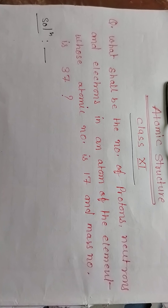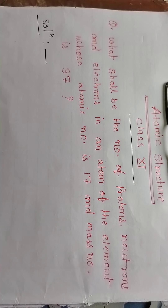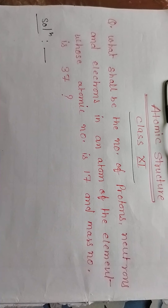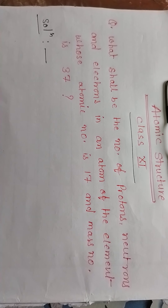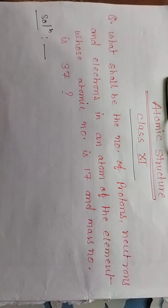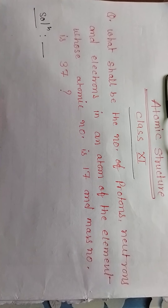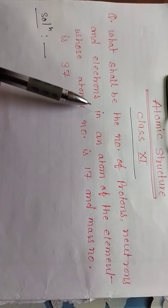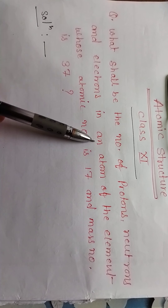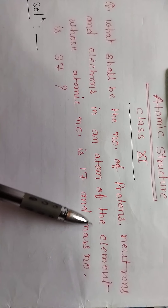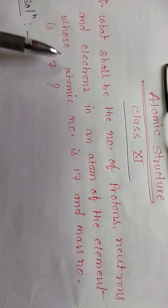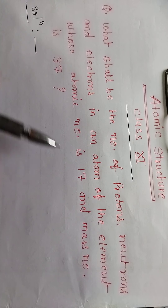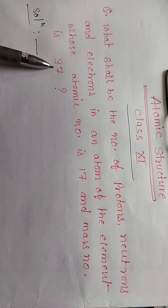I am going to discuss about atomic structure. Question: what shall be the number of protons, neutrons, and electrons in an atom of the element whose atomic number is 17 and mass number is 37?